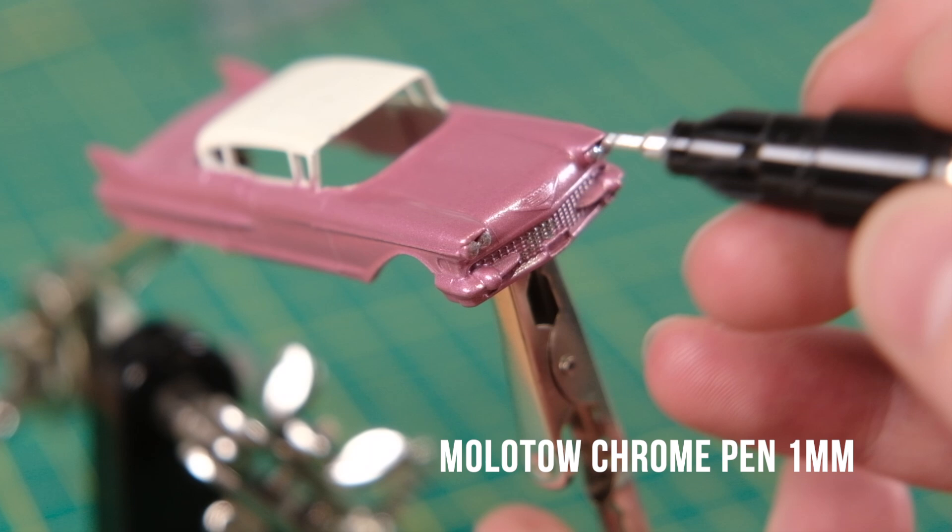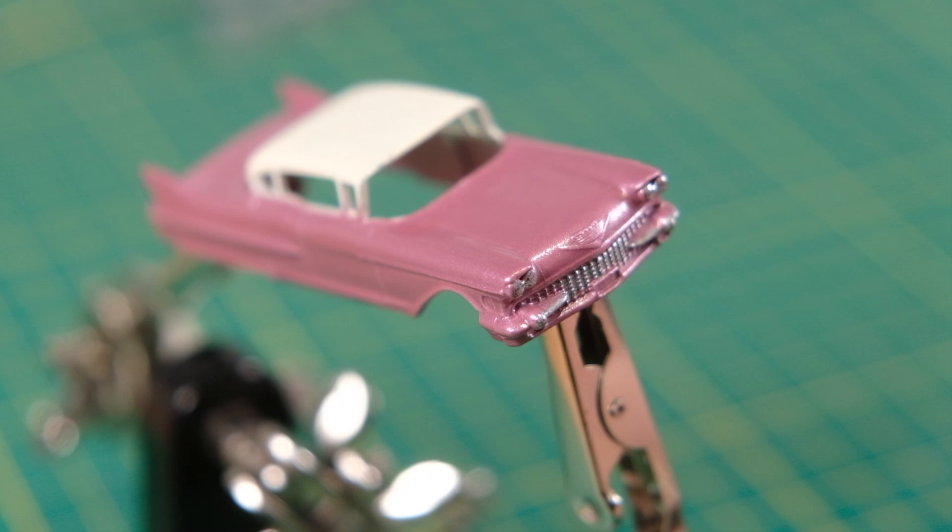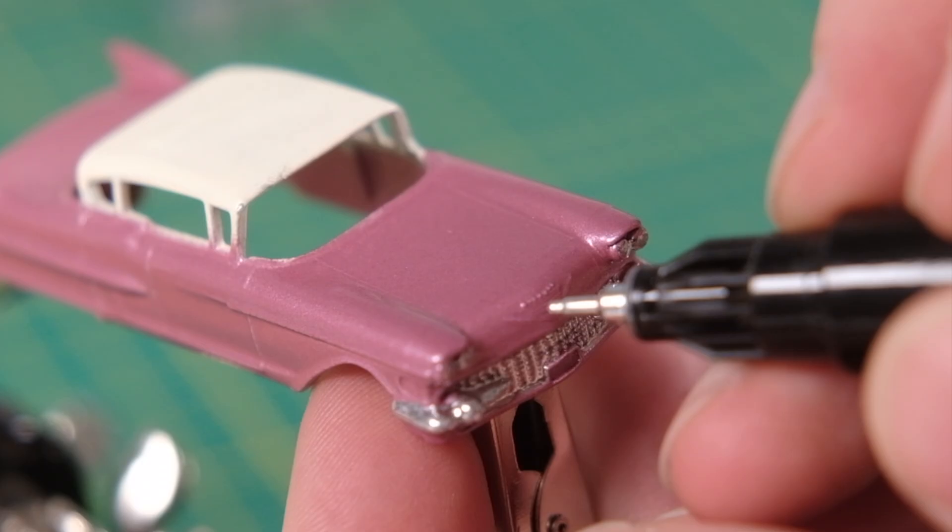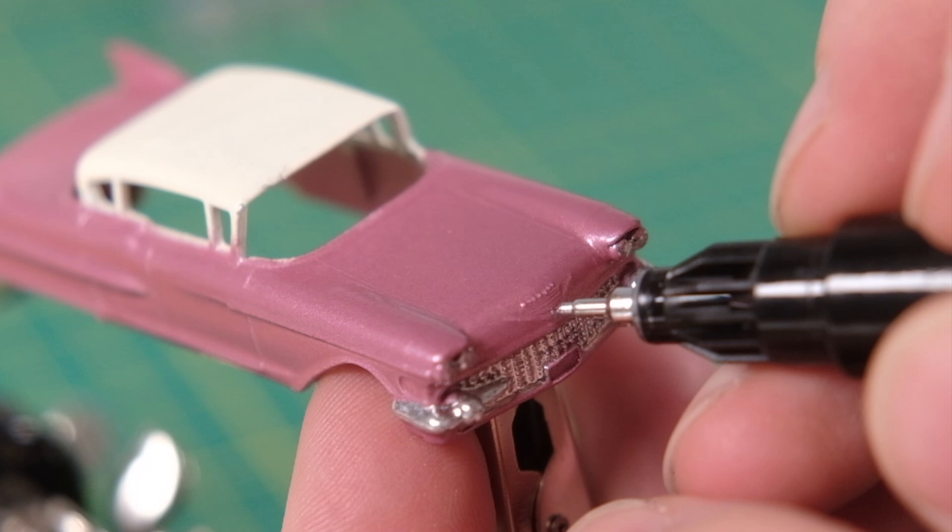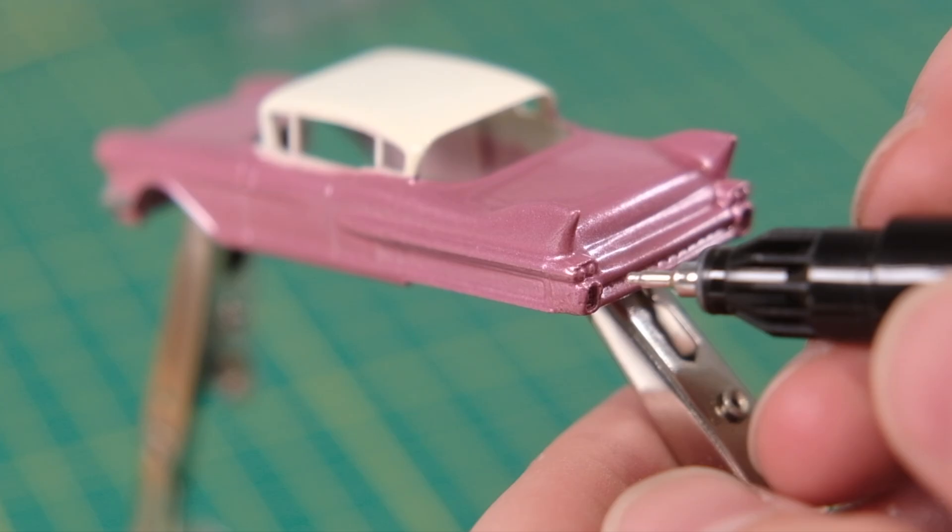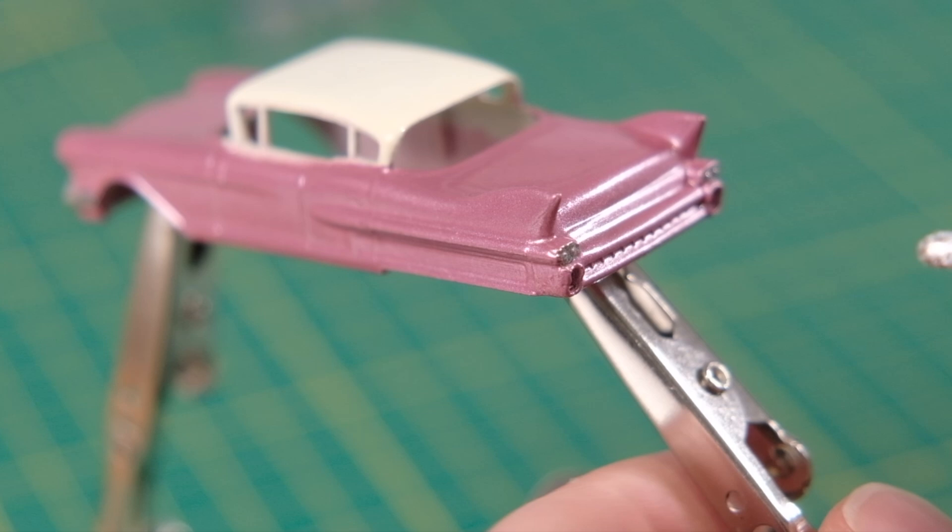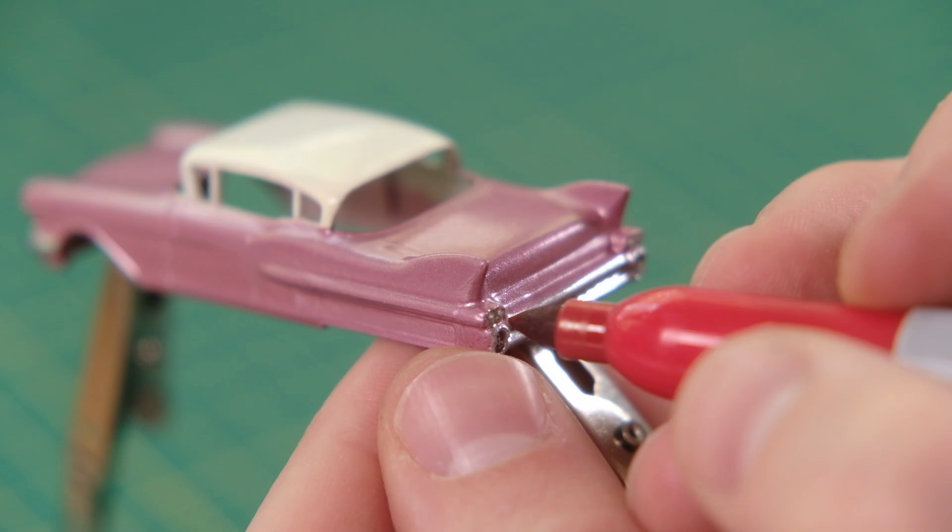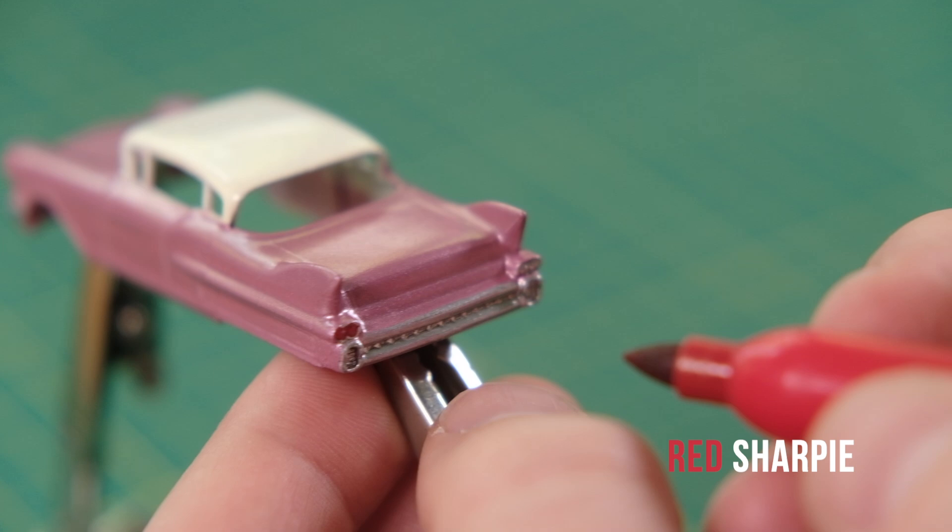Finally we reach the detailing stage of the build. I use both my one and two millimeter Molotow chrome paint pens to fill in the headlights, grille and bumper at the front as well as the bonus Cadillac emblem. At the back I cover the tail lights and bumper in chrome with a red sharpie later covering the rear lights.